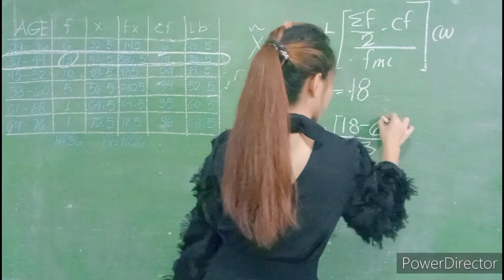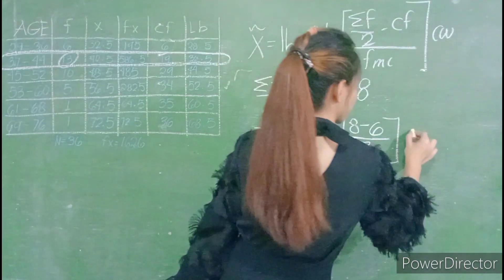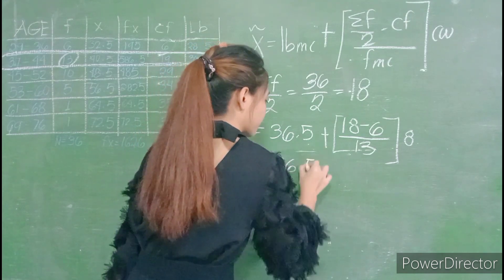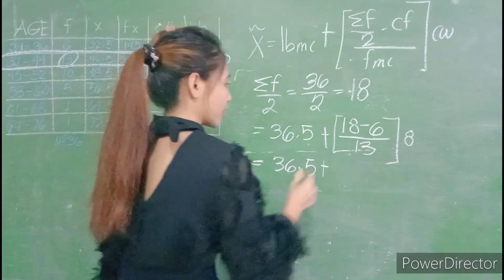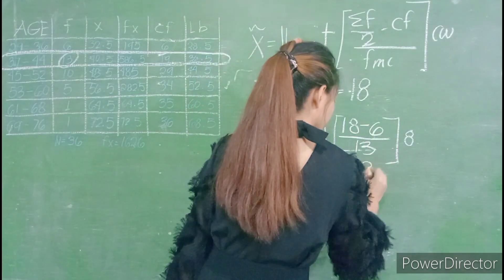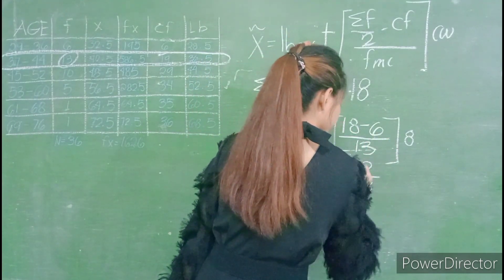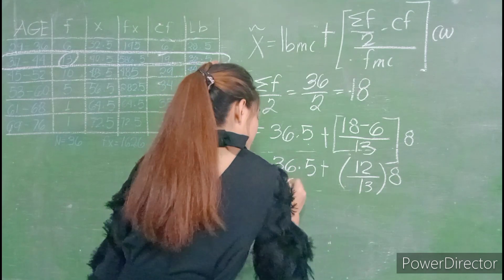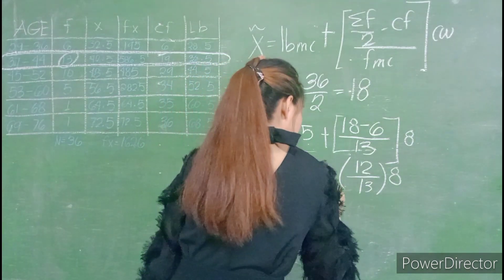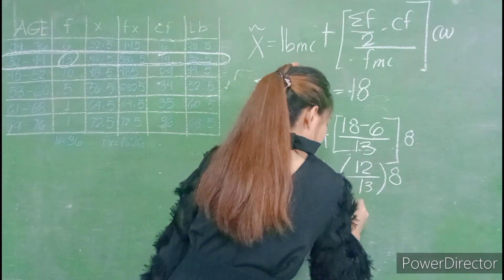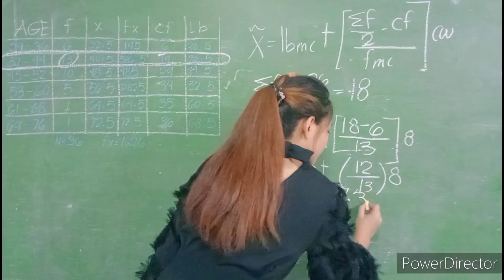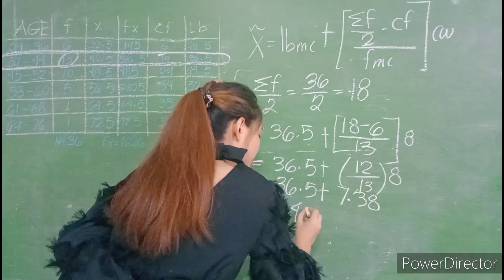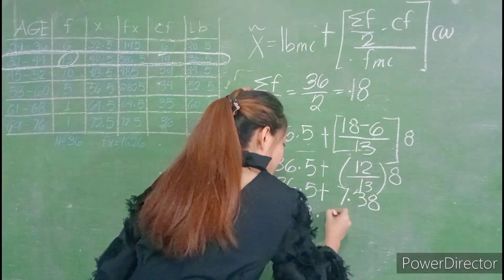Then multiply it by our class width which is 8. And then 36.5 plus 18 minus 6 is 12 over 13, then multiply it by 8. And 36.5 plus 7.38 is equal to 43.9.